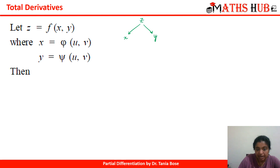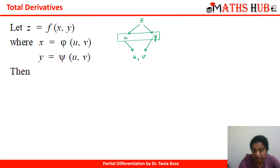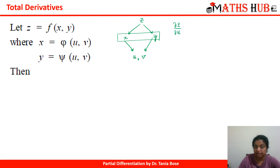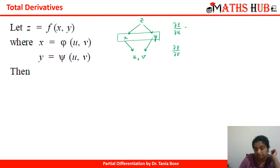Here, z is a function of x and y, and both x and y are further dependent on u as well as v. The intermediate variables are x and y. Ignoring them temporarily, z is a composite function of u and v. So we can take the derivative of z with respect to u or with respect to v — and since z depends on two variables in each case, we use partial symbols: ∂z/∂u and ∂z/∂v.